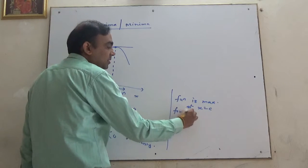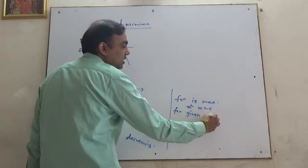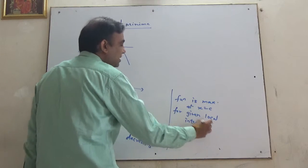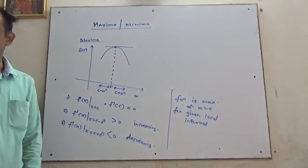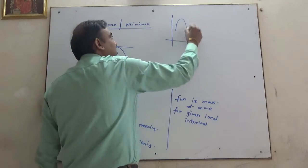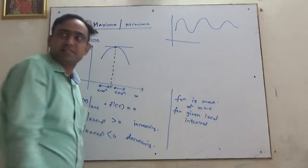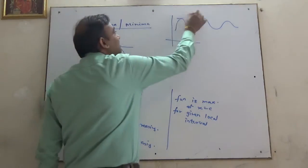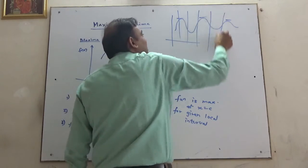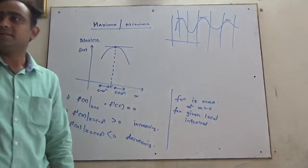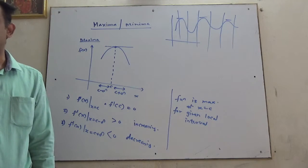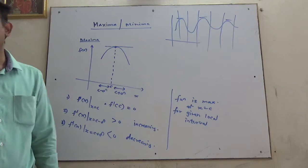In the given local interval, whether it's c minus delta or c plus delta. Why am I saying local? Because sometimes what happens is, if such graphs continue, at many places such maxima will be found. So for that local interval, that place becomes the maxima. It's not necessary that it's the maxima of the entire function. Understand?